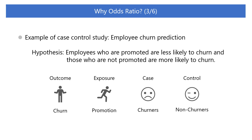Let's illustrate a case-control study with an example of employee churn prediction, which predicts which employees did and did not leave their jobs. Let's assume that the study is based on the hypothesis that those who are promoted are less likely to churn, and those who are not promoted are more likely to churn. Here, churn is the outcome of interest, and promotion is an exposure that could affect that outcome.